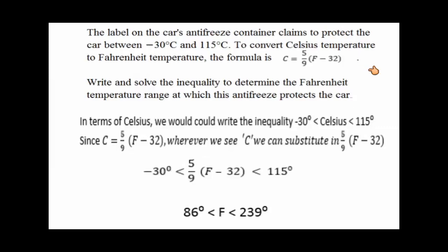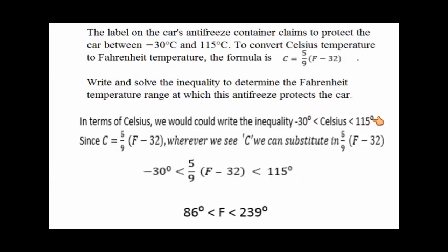Now let's look at a more complicated problem. Here we're dealing with the formula for converting Fahrenheit and Celsius degrees. We need to write and solve the inequality to determine the Fahrenheit temperature range at which this antifreeze protects the car. In terms of Celsius, we know the range is between negative 30 and 115. We're going to plug in our temperatures wherever we see C in the formula and solve for F.